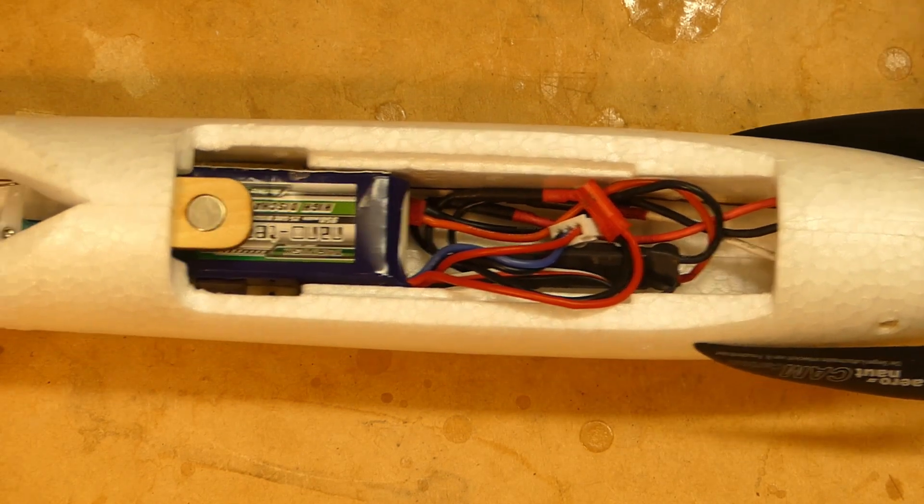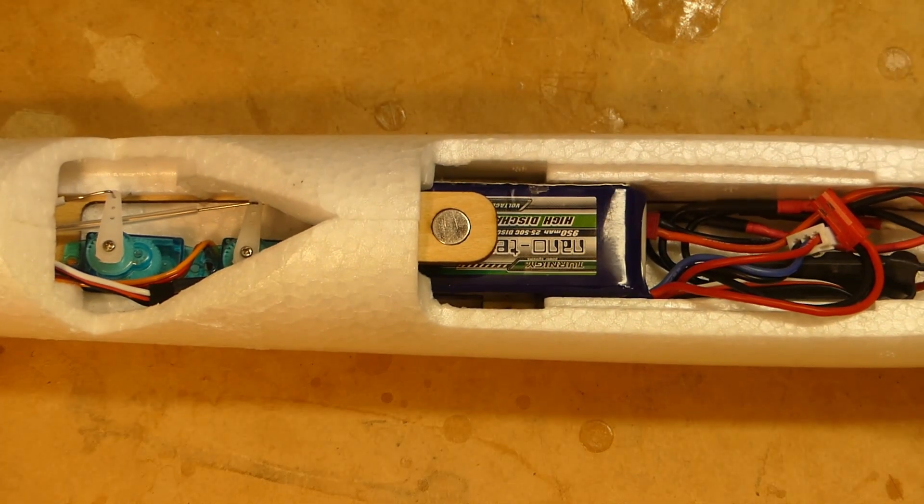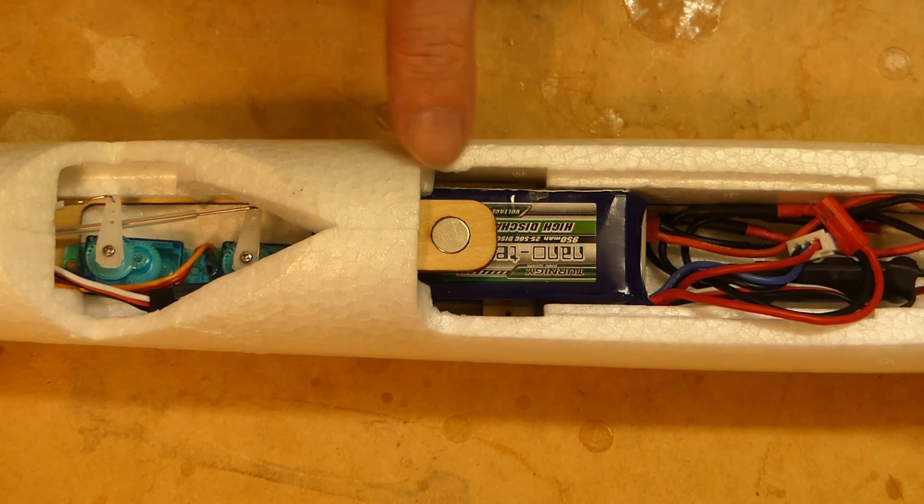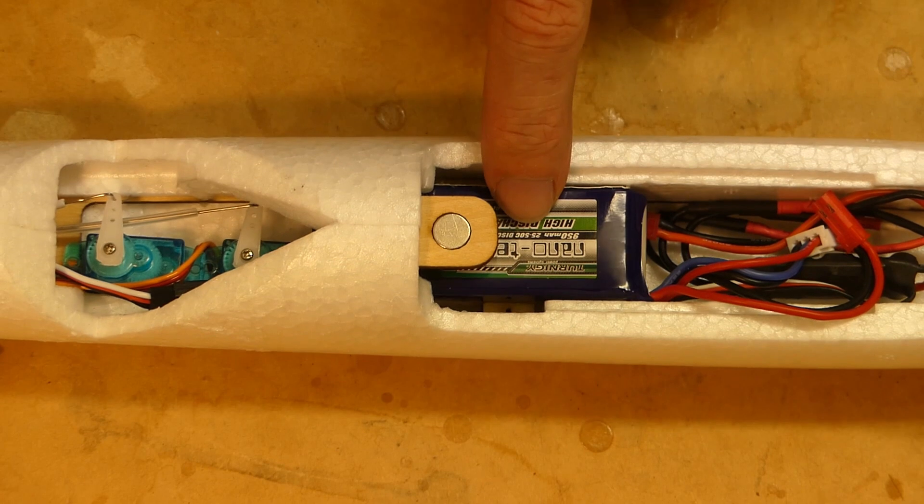Then the battery sits a lot further back than normally would a new glider. This is where the servos would normally go. Now I got the battery there.